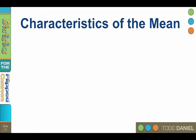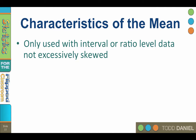The measure of central tendency you choose to report depends upon your data, so it is important to know when to choose the mean instead of the median or the mode. The mean has many advantages, but it can only be used with interval or ratio data that are not excessively skewed. To determine if skewness is excessive, divide the skewness value by the standard error of skewness from SPSS. Values greater than positive or negative 1.96 are excessive, and you can apply this same technique for kurtosis as well.